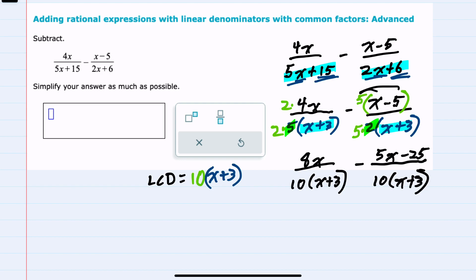We can now do the subtraction because we have a common denominator. Our denominator is 10 times x plus 3.